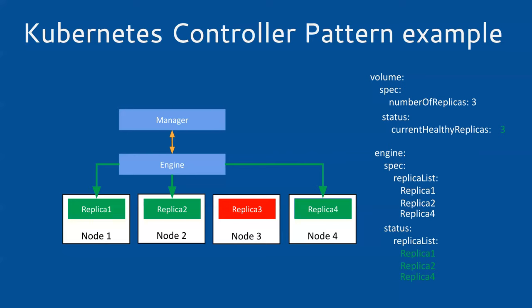Just a quick question: is the state of the volume — which replicas are on which nodes and which are healthy — stored within the CRDs in the Kubernetes API? Yes. The CRDs reflect the state observed from the engine. The engine is still the single point of truth. What we observe in the engine is stored in the CRD, like the engine status and the replica list.